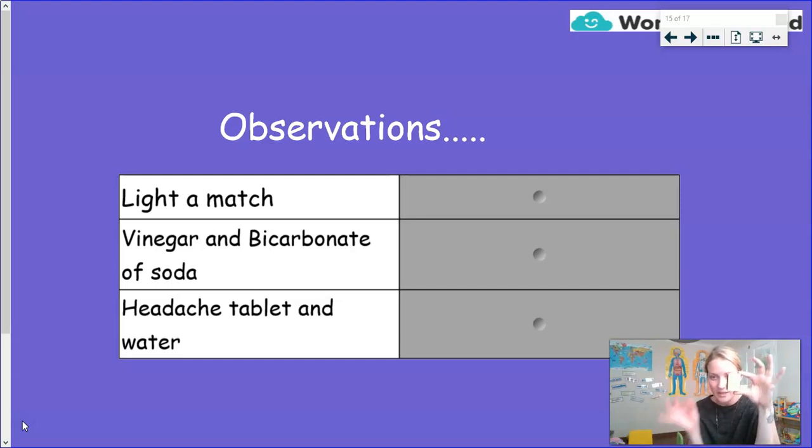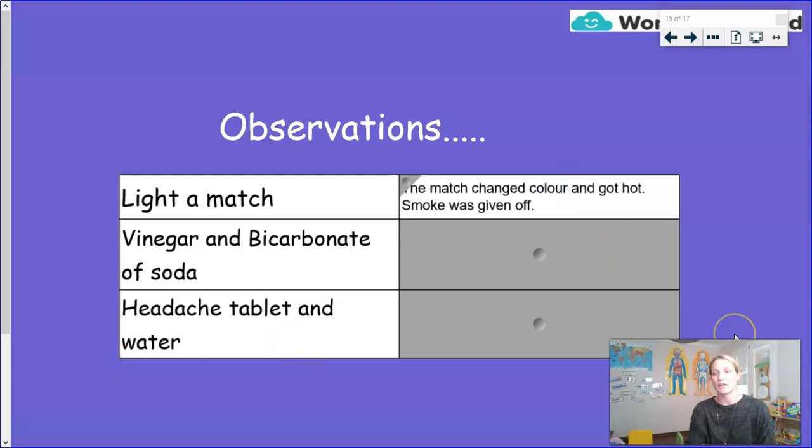First one, some matches. Definitely don't ever play with fire, my loves. But here we go. I'm going to strike this match. I want you to watch and observe what occurs. Obviously, I've got fire. It's burning its way down the match. And the match has gone out. There we go. It's burnt. What can we write that we observed from that? Well, I would write something along the lines of the match changed color, because it did. It went black where the fire had been. And it got hot. And smoke was given off.